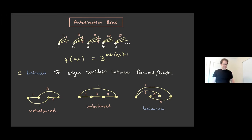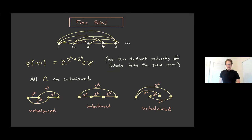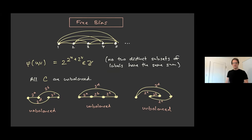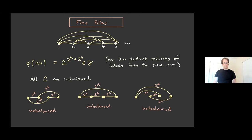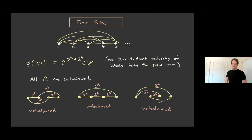The final example is where every cycle is unbalanced — free bias (which Zaslavsky called contrabalance). This obviously satisfies the theta property. You can achieve it by assigning all labels to be distinct powers of two: no sum of one set of powers of two equals the sum of another set, so you never get cancellation and everything is unbalanced. These three examples — free bias, anti-direction bias, and k-poise bias — all have to show up as Ramsey outcomes, because any theorem that didn't find them would have them as counterexamples.